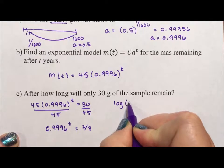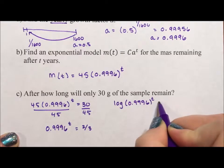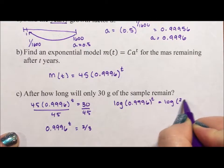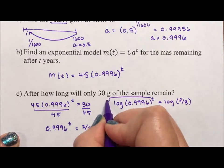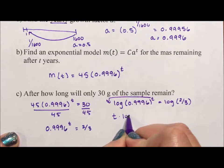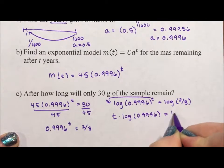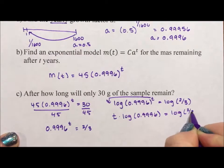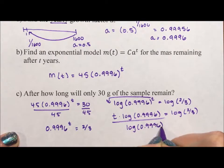I am then going to take the log of both sides. So log of 0.9996 to the t equals log of two thirds. The reason I do this is because logs are exponents, which means we can use the power rule to bring the t out front. T times log of 0.9996 equals log two thirds. And then we can divide by the log of 0.9996.